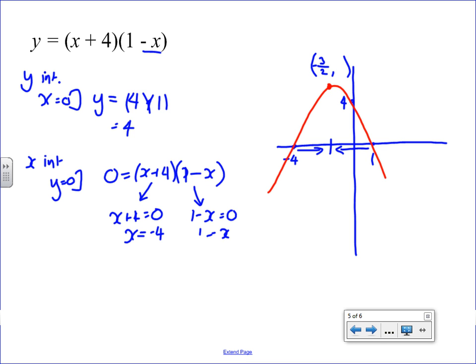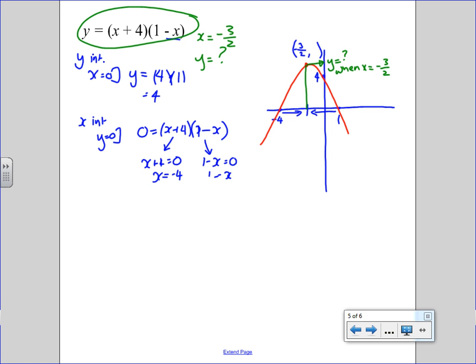Now, this is a really good point. We've got two options here. Usually, to get to the turning point, we complete the square. But in this case, given that you can see what the x-intercept is going to be, because it's halfway between the roots, then what we can do to find the height is what we're asking is, what is y when x is minus 3 over 2? So, we can just take the original equation, we can put in x as minus 3 over 2. I don't know what y is. It's a good check, isn't it?